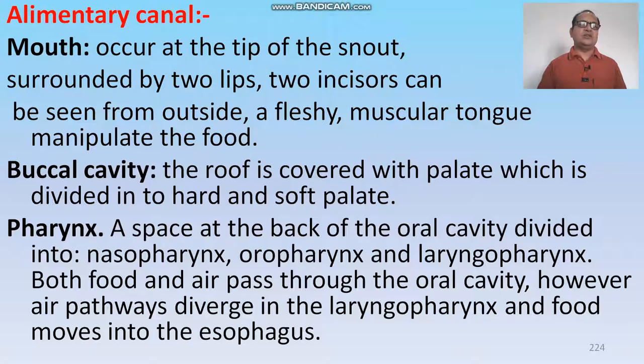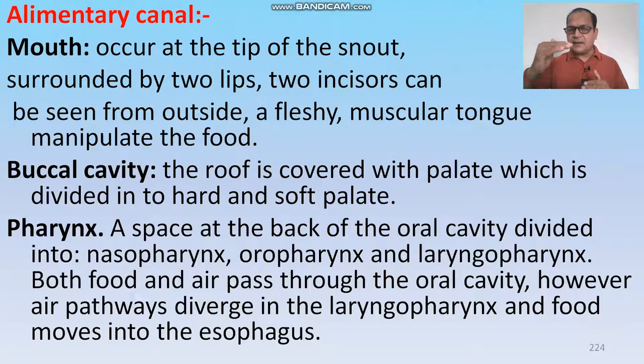The mouth occurs at the tip of the snout and is surrounded by two lips. Two incisors can be seen from the outside. A fleshy, muscular tongue is found, whose function is to manipulate food. The roof of the buccal cavity is covered with a palate divided into a hard palate anteriorly and a soft palate posteriorly.